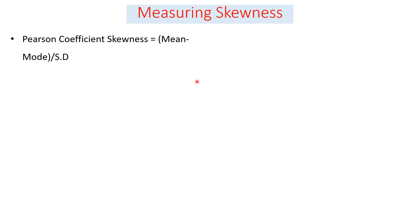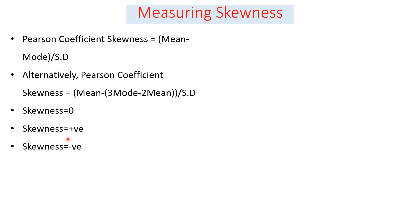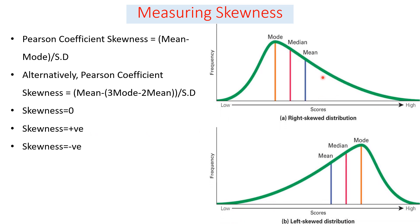Let us see how to measure skewness. Skewness can be measured using Pearson's coefficient of skewness, calculated by: mean minus mode, divided by standard deviation. Alternatively, it can be calculated as 3 times (mean minus mode) divided by standard deviation. If we get a zero value, our data is perfectly normally distributed. If we get a positive value, it is a positively or right-skewed distribution. And if we get a negative value, it is left-skewed or negatively skewed data.